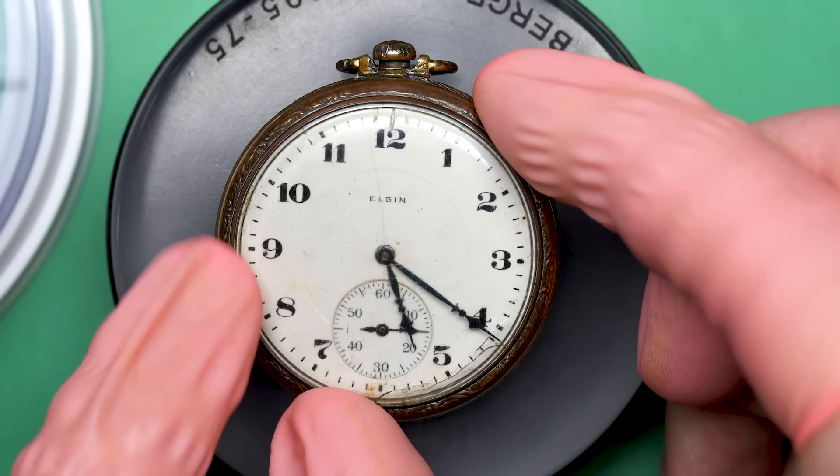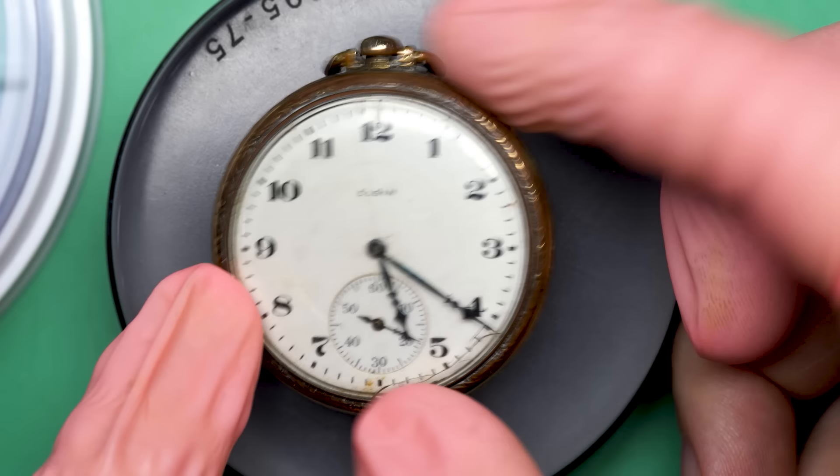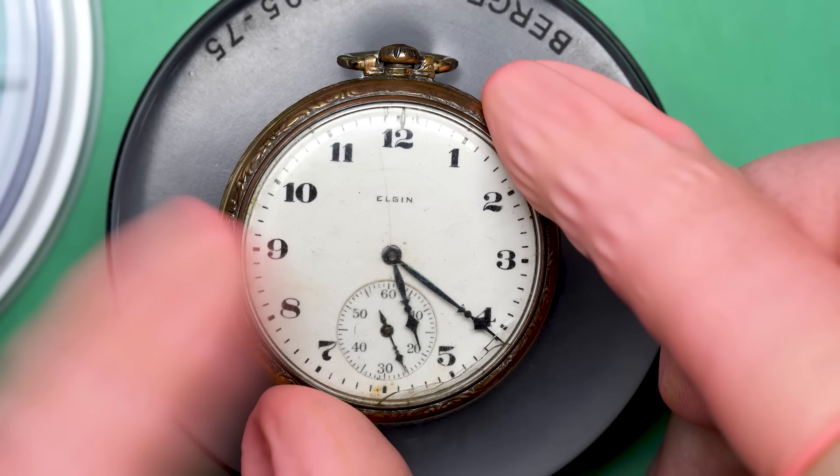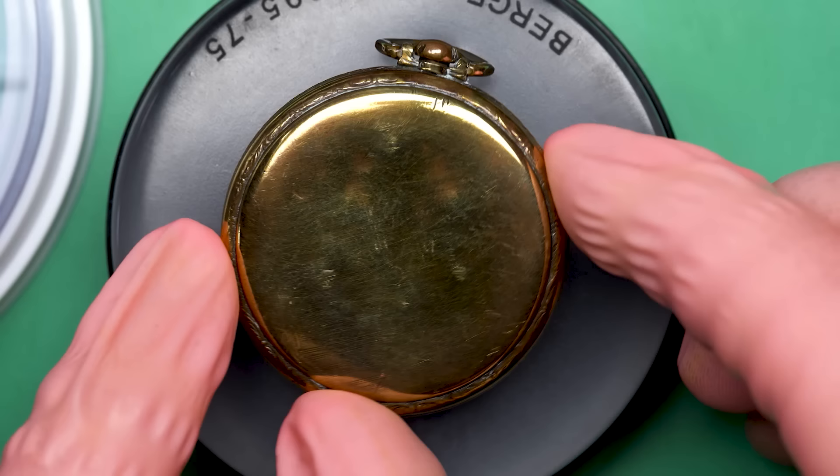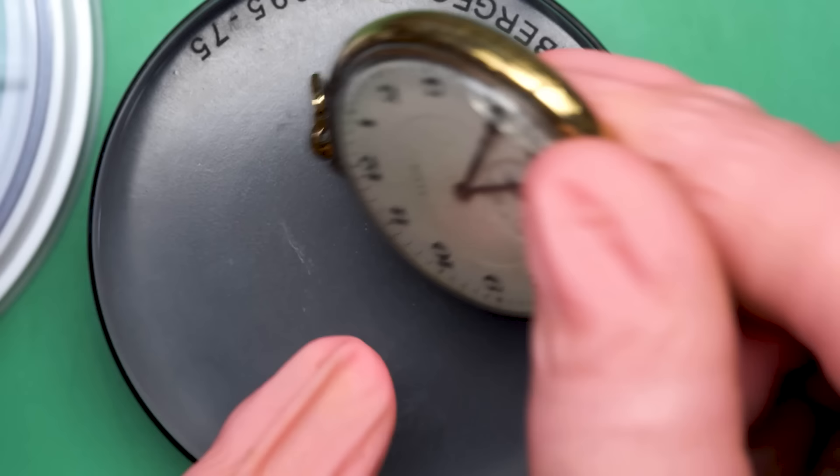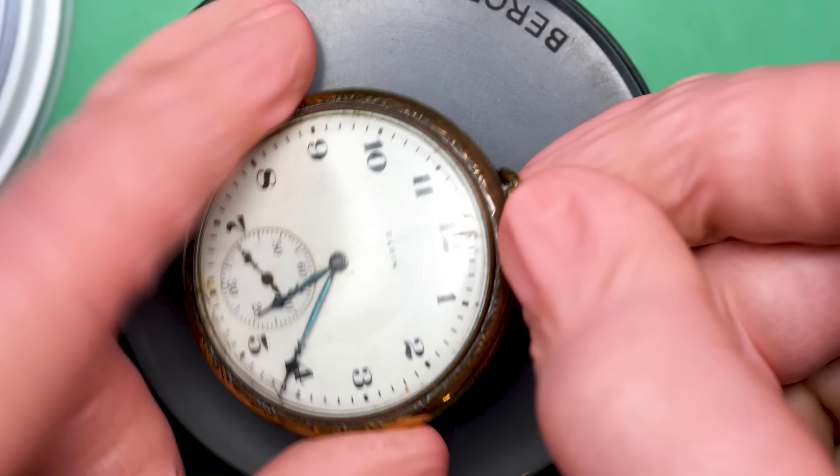This time on the bench, I've got an Elgin Pocket Watch. This one dates to 1919 and it belongs to a friend and supporter of this channel. He asked me if I could take a look at this watch that belongs to his grandfather. As you can see, this thing's awesome. This is a fairly typical watch for the era. They made a million of these things.